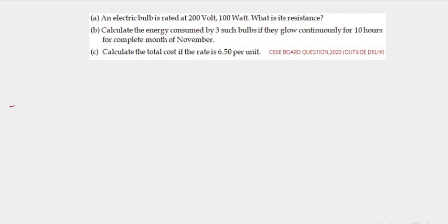Hello students, welcome back. Let's take up the next question. An electric bulb is rated at 200 volt, 100 watt. What is its resistance? Calculate the energy consumed by three such bulbs if they glow continuously for 10 hours for the complete month of November and calculate the total cost if the rate is 6.50 per unit.